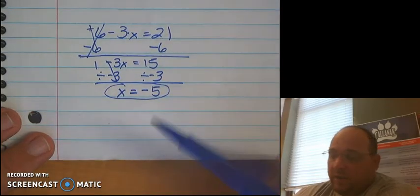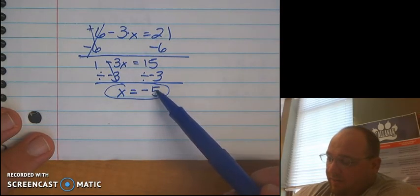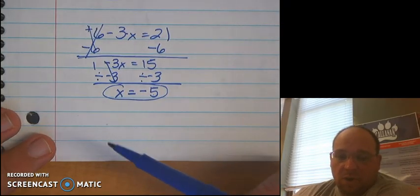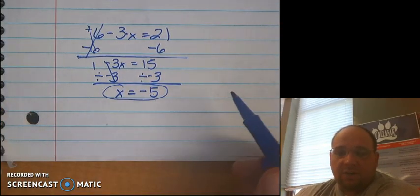Again, if I wanted to, I could double check by substituting negative 5 in for x. And I would find out that the left side is equal to 21 and lets me know that this negative 5 is the correct answer.